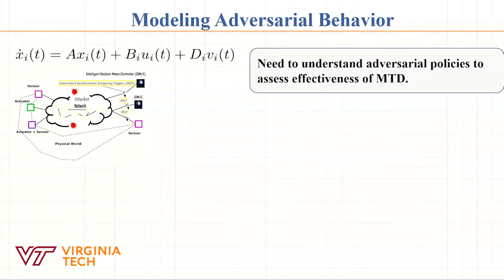Since we're controls people, although we don't need a model because our approach is model-free, for description I'll present it as a linear system so we can have a clear description. We have different agents, and every agent is modeled by this system. The attacker in this learning system can change the physical system by changing A, B, and D matrices, and can also change the actuator by manipulating vi. What I control is ui, the classical control input - but again, we don't require any knowledge of the system.